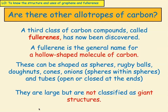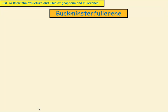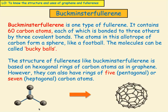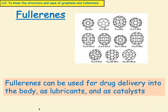They are large, but they are not classified as giant structures. Here's one of the first ones to be discovered — it was called Buckminsterfullerene. Buckminsterfullerene contains 60 carbon atoms, and that's why we don't classify it as a giant structure. Those 60 carbon atoms are each bonded to three others by three covalent bonds. The atoms form a sphere like a football, and the molecules can be called buckyballs. The structure is based on hexagonal rings of carbon atoms, as in graphene, but they can also have rings of five or seven carbon atoms.